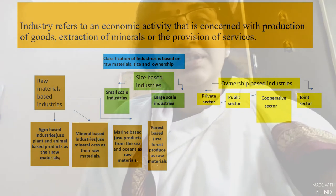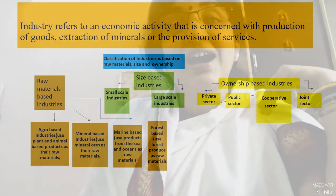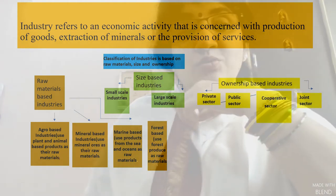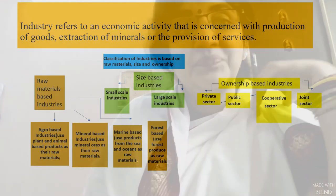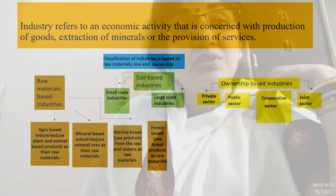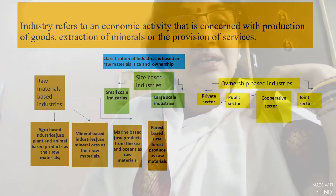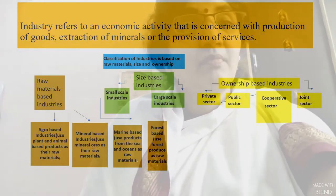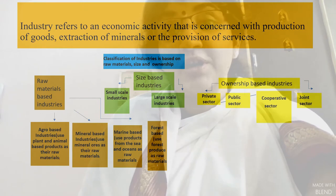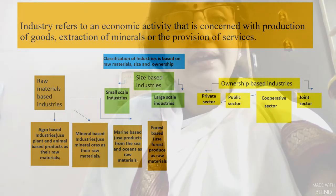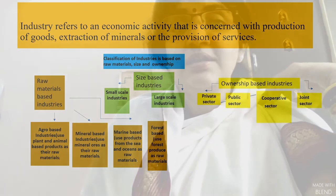The other agri-based industries are textiles, dresses, and clothes. Agri-based industries also include milk products, dairy products, and leather products.